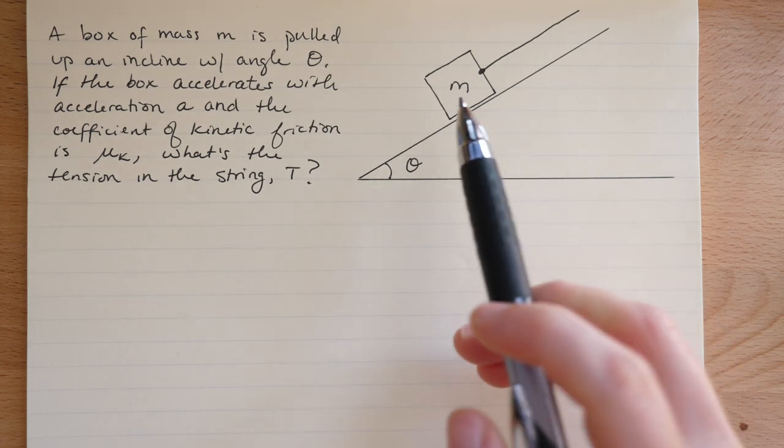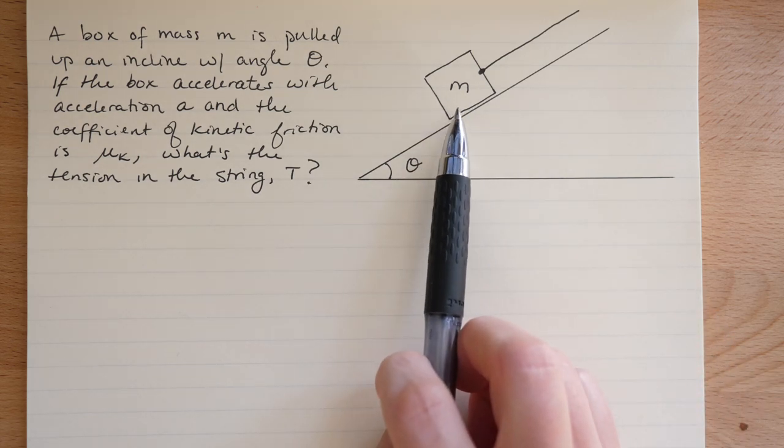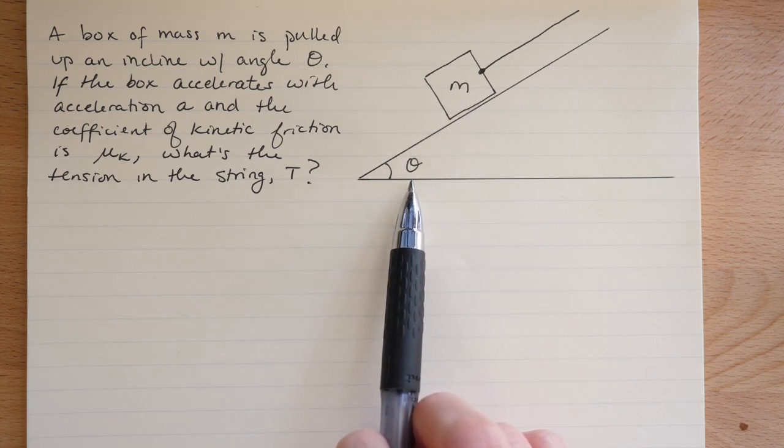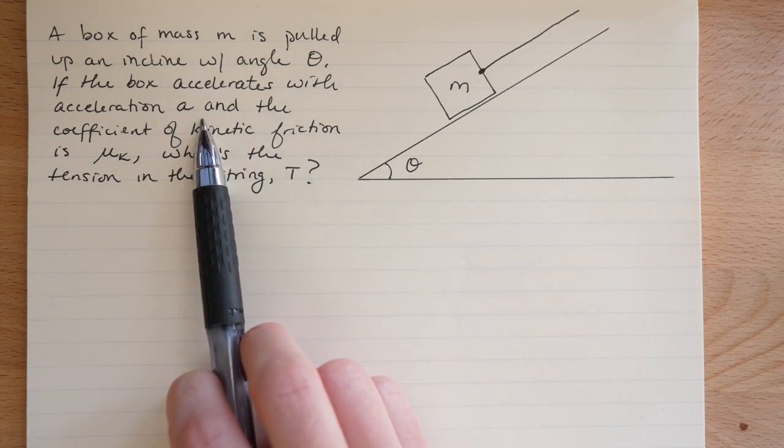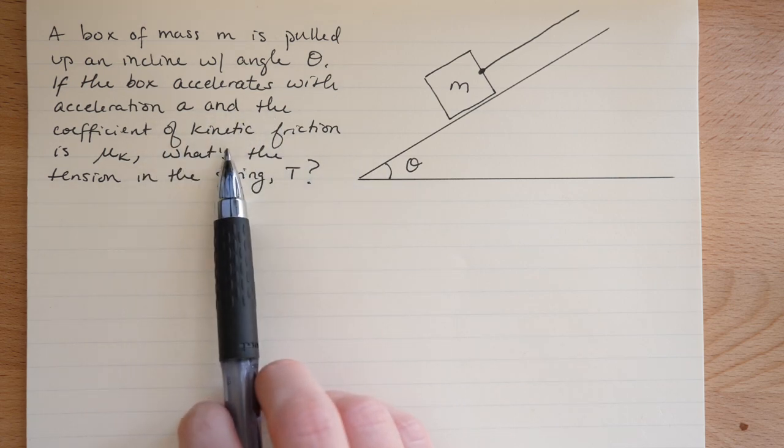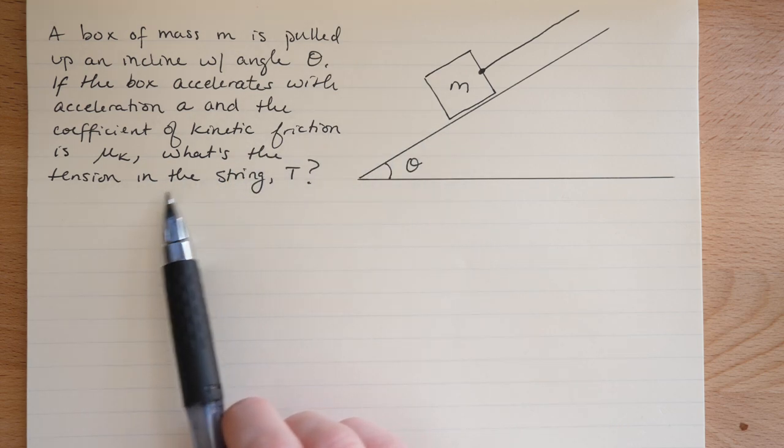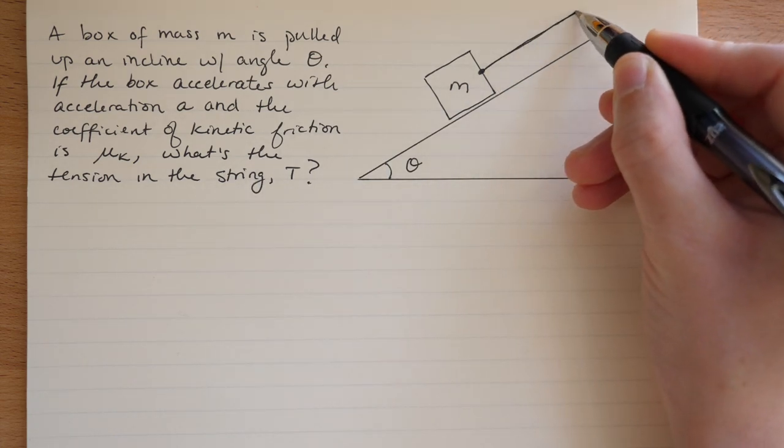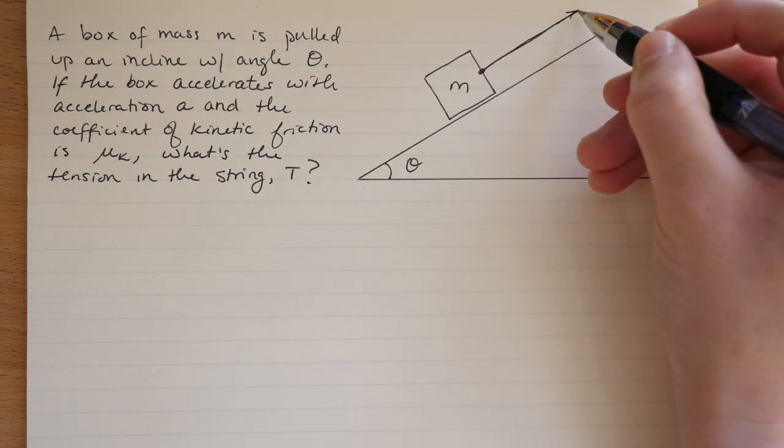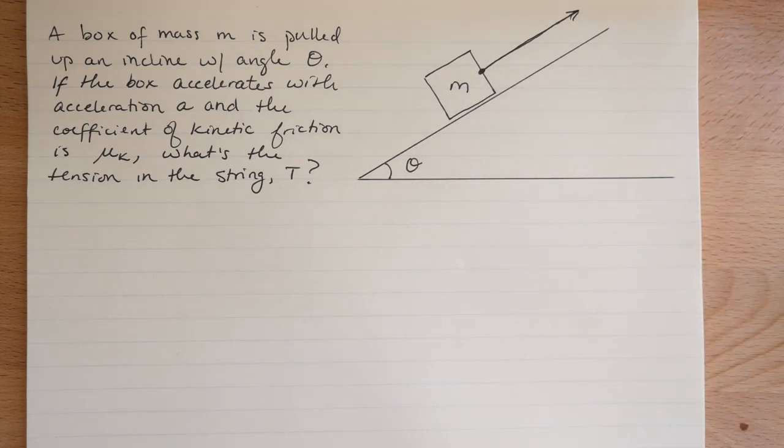Okay, here's a problem where a box of mass m is pulled up an incline with angle theta, and we're told that if the box is accelerating with acceleration a, there's a coefficient of kinetic friction on this surface mu k, and we're asked to find the tension in the string with which the mass is being pulled up the incline. So this is a pretty standard Falcon problem. Let's use the Falcon methodology to solve this problem as an example.